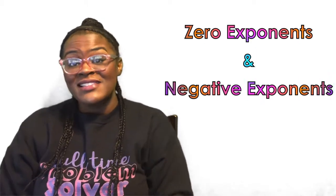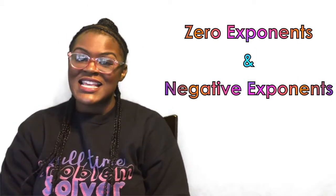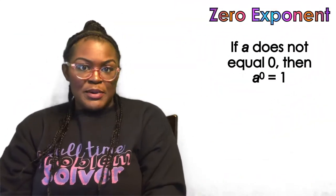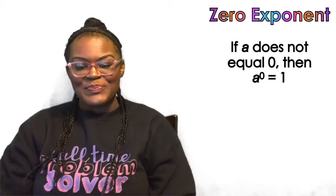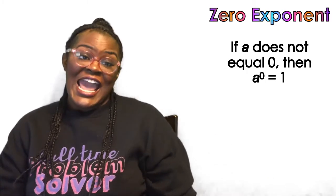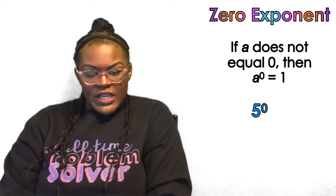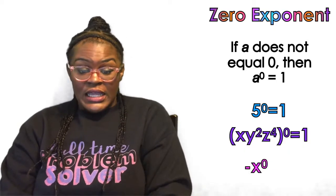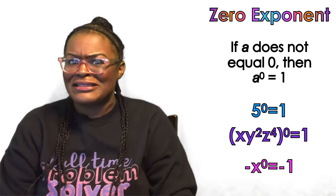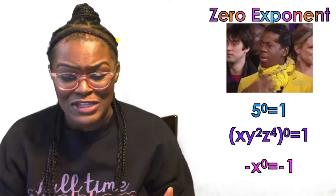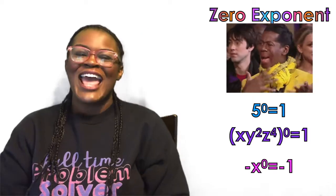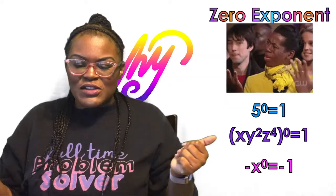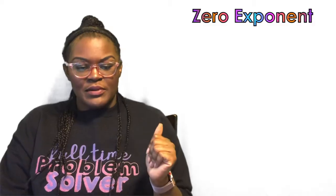Welcome to zero exponents and negative exponents explained. So your math teacher is going through her exponent rules and she says: if a does not equal zero, then a to the zero power equals one. She puts examples on the board — five to the zero power equals one — but you're like, wait, explain why. Well, that is what I am here to do.